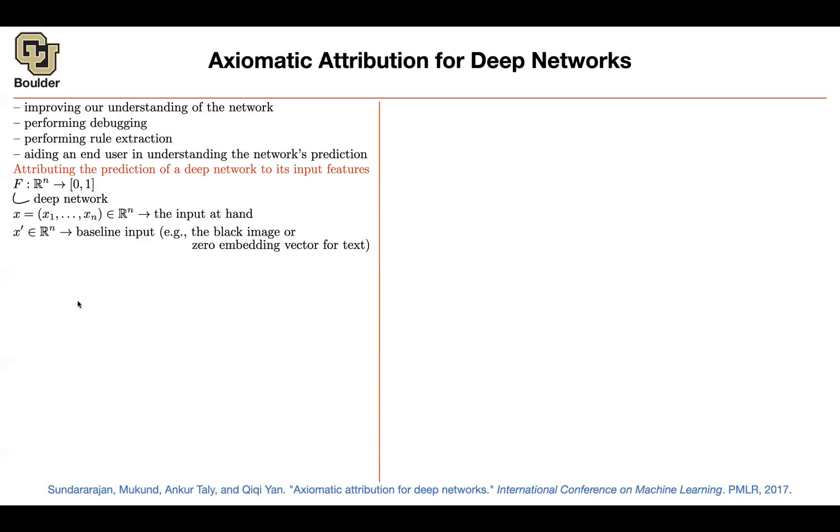So this is very similar to what you were doing with deep lift. There is some baseline, which could be a black image or some zero embedded vectors for your text. And then for each pixel in your input or each feature in your input, you want to associate an importance or you want to attribute some importance relative to some baseline.